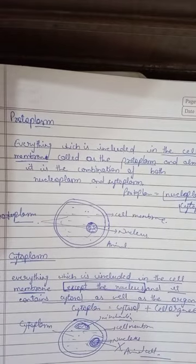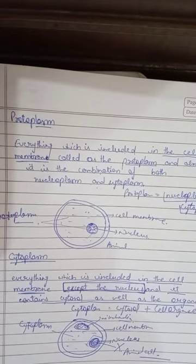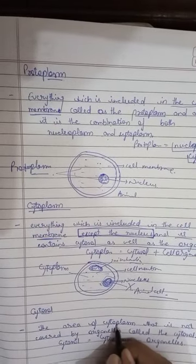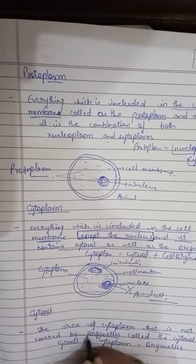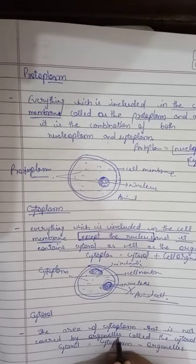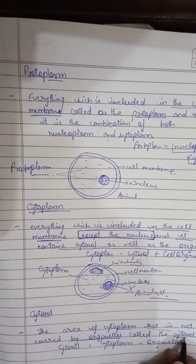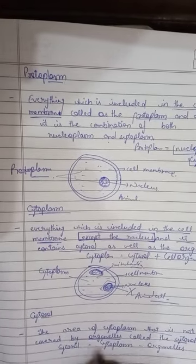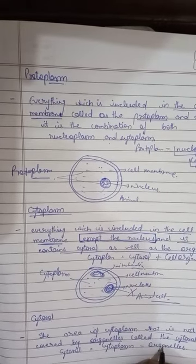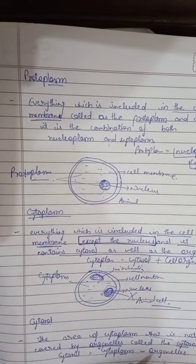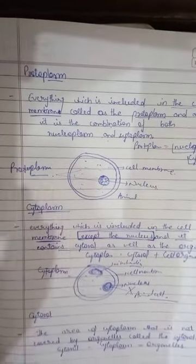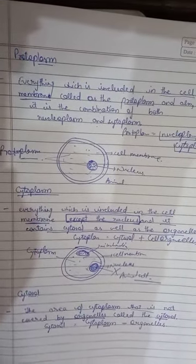Now let's go to the topic cytosol. Cytosol is the area of cytoplasm that is not covered by organelles. Where the organelles are not present, we call that cytosol. So cytosol equals cytoplasm minus organelles. The portion of cytoplasm where organelles are not present is called cytosol.